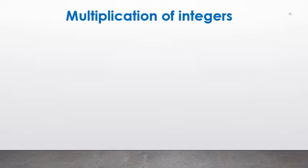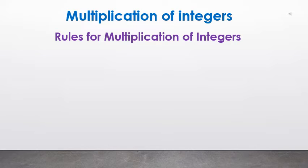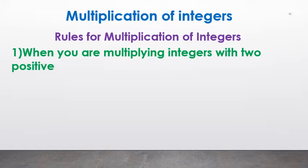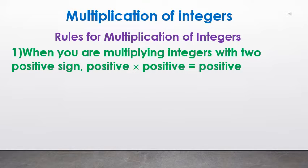Multiplication of integers. First we will see the rules for multiplication of integers. The first rule is when you are multiplying integers with 2 positive signs, positive into positive is equal to positive. For example, 2 × 3 is equal to 6.